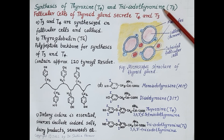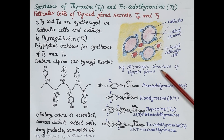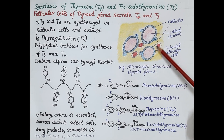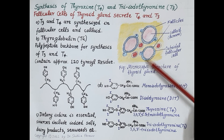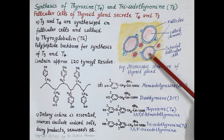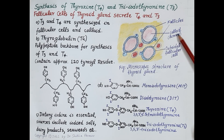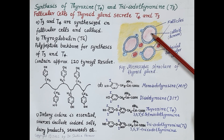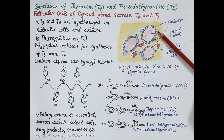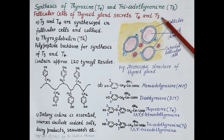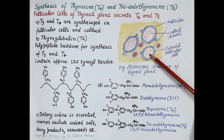The thyroid gland is a butterfly-shaped bilobed endocrine gland located in the neck region. Looking at its microscopic structure, the thyroid gland is composed of spherical follicles. These follicles consist of cuboidal epithelium and a central follicular lumen. The cuboidal cells secrete a sticky fluid called colloid, which fills the central follicular lumen. The thyroid gland is highly vascular and richly supplied by blood. T3 and T4 are synthesized in the follicular cells and in the follicular lumen.